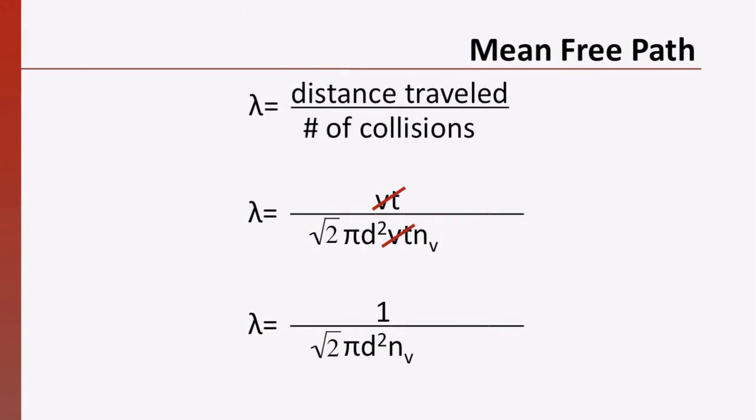So, now we have this expression for the mean free path. What would happen to the mean free path of a tungsten atom if we introduced other gas molecules into the bulb? Would the mean free path increase, decrease, or stay the same? Pause the video and take a moment to think about it.